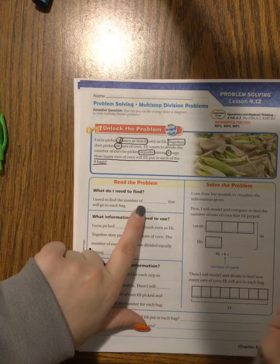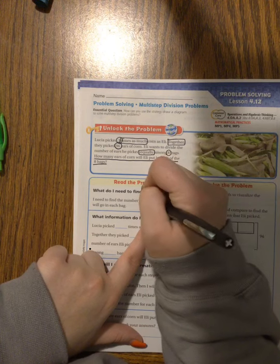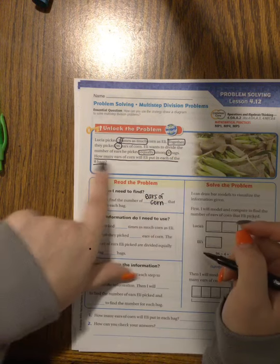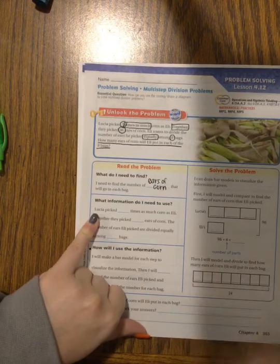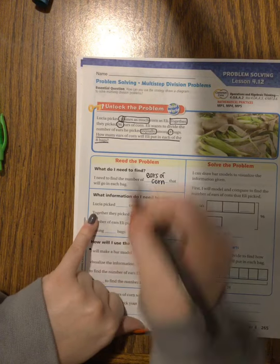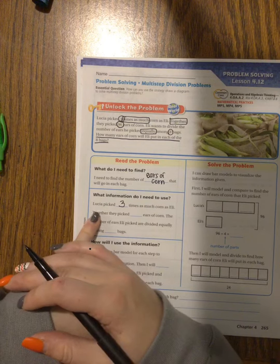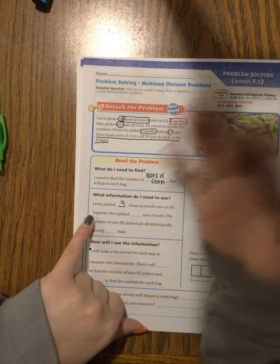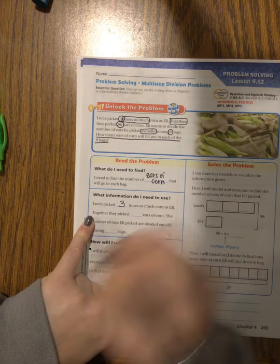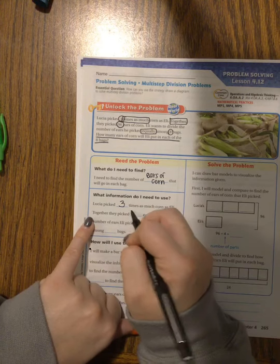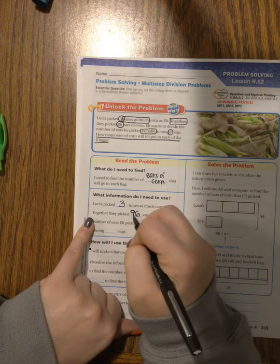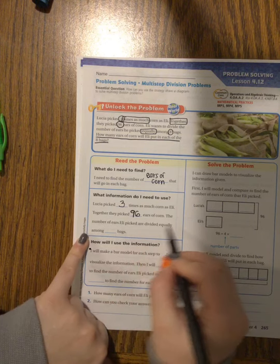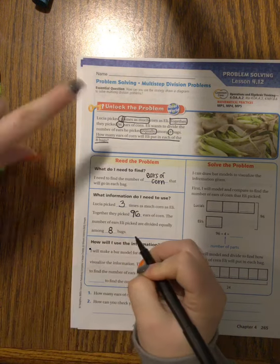So I need to find the number of ears of corn in each bag and I know that just because that's what the question is asking me. So I know now I've got to go through and figure out what I know. Well, I already know that Lucia picked three times as much. It doesn't mean that Lucia picked three ears of corn. It means whatever Eli picked, she did three times that many. So I have to figure out, well, I've got some math to do here. Together I know that when I add up Lucia's total and Eli's total I should get the number 96 ears of corn because all together that's how much they picked. The number of ears that Eli picked are divided equally among eight bags and this is all information that I'm getting straight from this word problem.